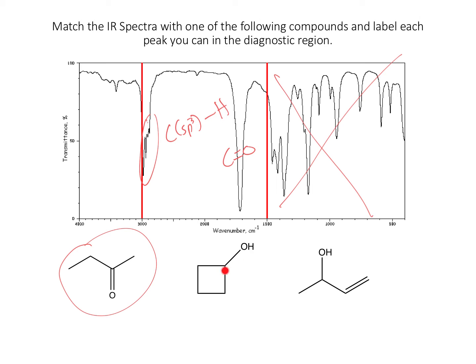This one doesn't have carbon-oxygen double bonds at all, plus we've already assigned it, so that one's out. We might have been hesitant because this could have been a carbon-carbon double bond, although the shape and intensity led me to believe it was probably a carbon-oxygen double bond. But this molecule would also have the alcohol signal, which we don't see, so it can't be that one. That leaves me fairly confident that this is the correct choice.